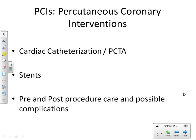PCIs — percutaneous coronary interventions — are various procedures for patients with coronary artery disease. The first is a cardiac catheterization and a PTCA — percutaneous transluminal coronary angioplasty. Pre-procedure: ask about allergies. The cannulation is usually the femoral artery; they thread it up and inject dye into the coronary arteries. If the patient has renal insufficiency or shellfish allergy, they'll still proceed but will preload the patient with antihistamines.